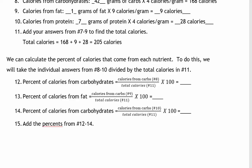Let's scroll down to our next part. In this section, we're going to calculate the percent of calories that come from carbohydrates, fat, and protein. To do this, we'll take the individual answers from numbers eight through 10 and divide it by the total calories in number 11. Then, to turn it into a percent, we multiply by 100. So let's look at number 12. Number 12 says percent of calories from carbohydrates. We're going to take the calories from carbs, which was in number eight, divided by the total calories in number 11, and times that by 100.